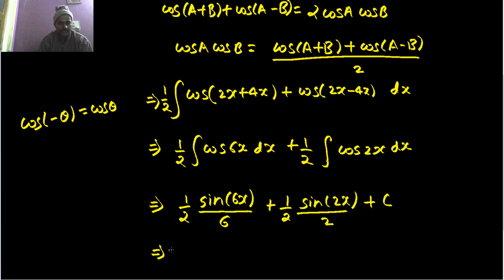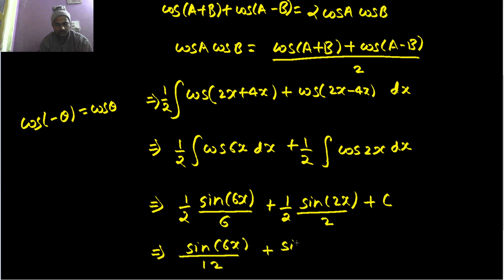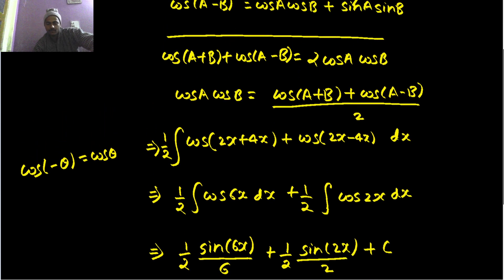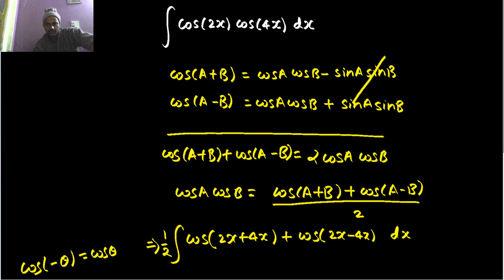So finally, this is your final answer: sine 6x over 12 plus sine 2x over 4 plus C. I hope you enjoyed this. More such problems are there in the playlist as I mentioned earlier. Go and watch that out and share this with your friends. Thanks again.